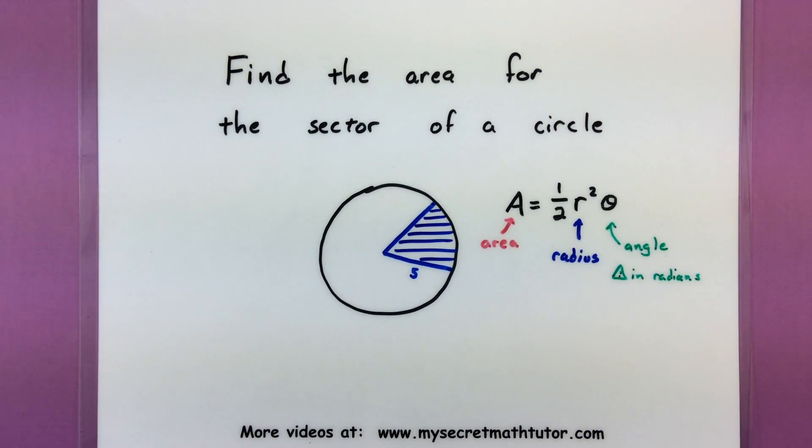It looks something like this. It says that the area equals one half multiplied by the radius squared multiplied by the angle, as long as that angle is written in radians. So it's a really neat and handy formula that you can quickly figure out the area of something like that.